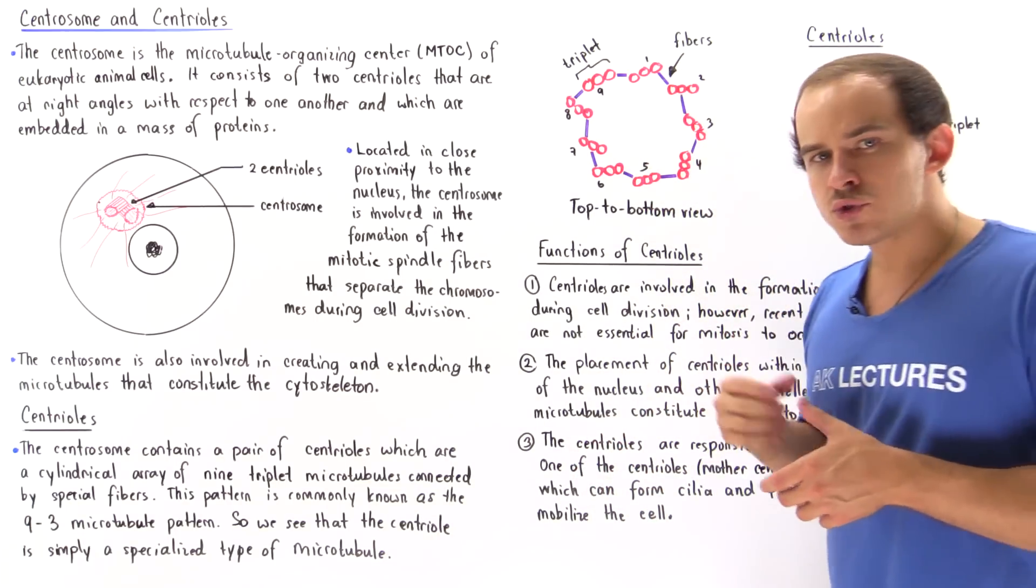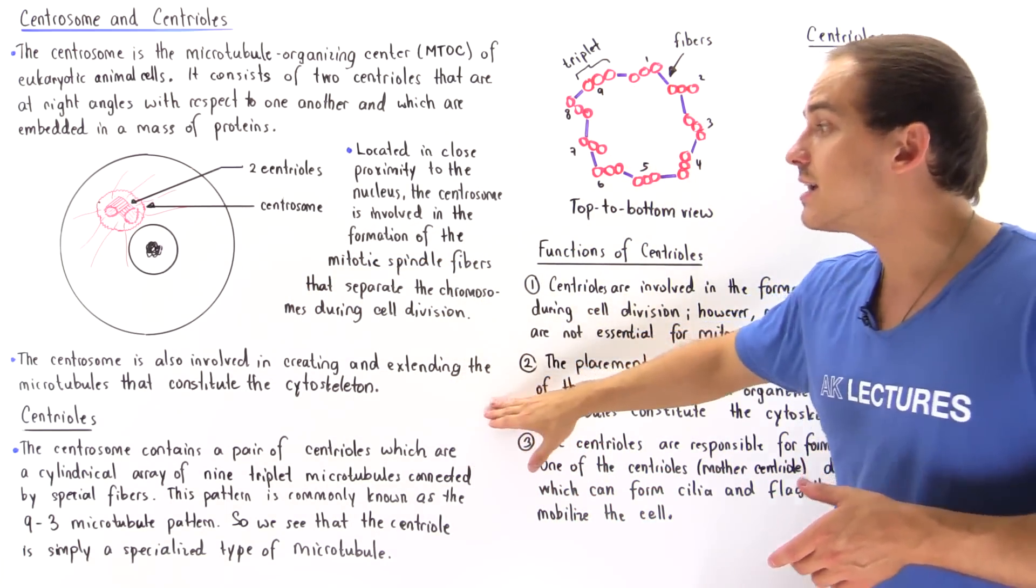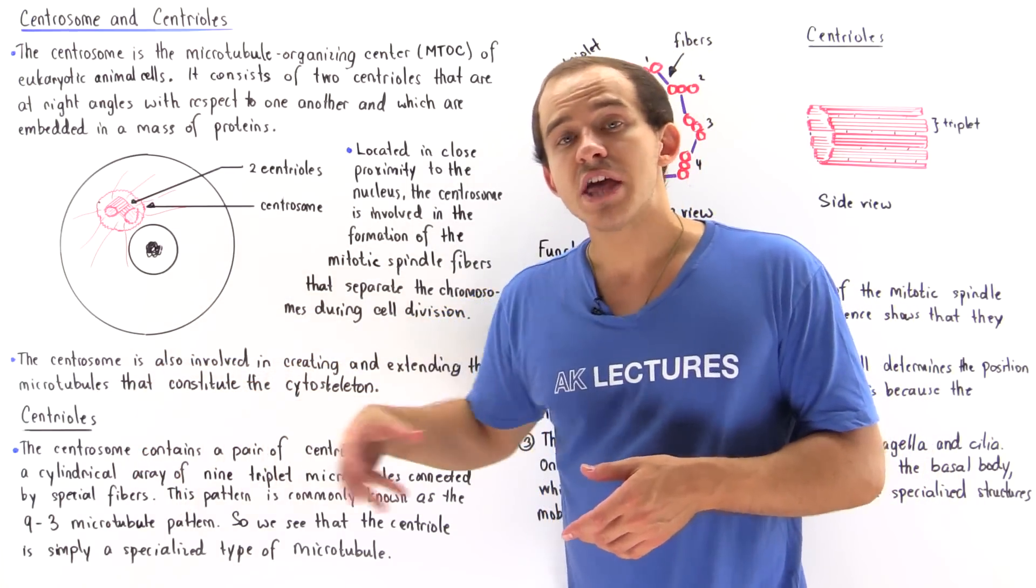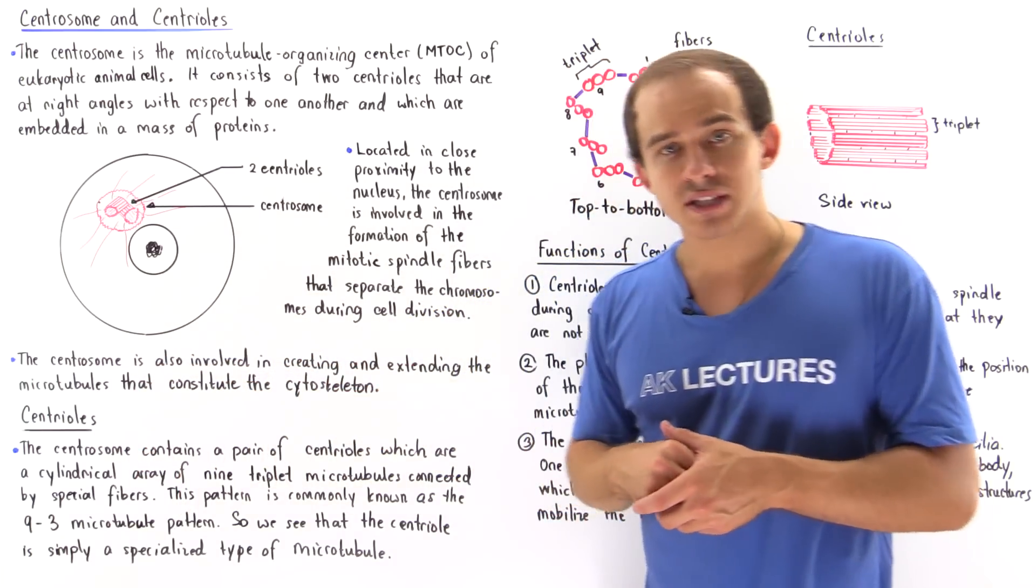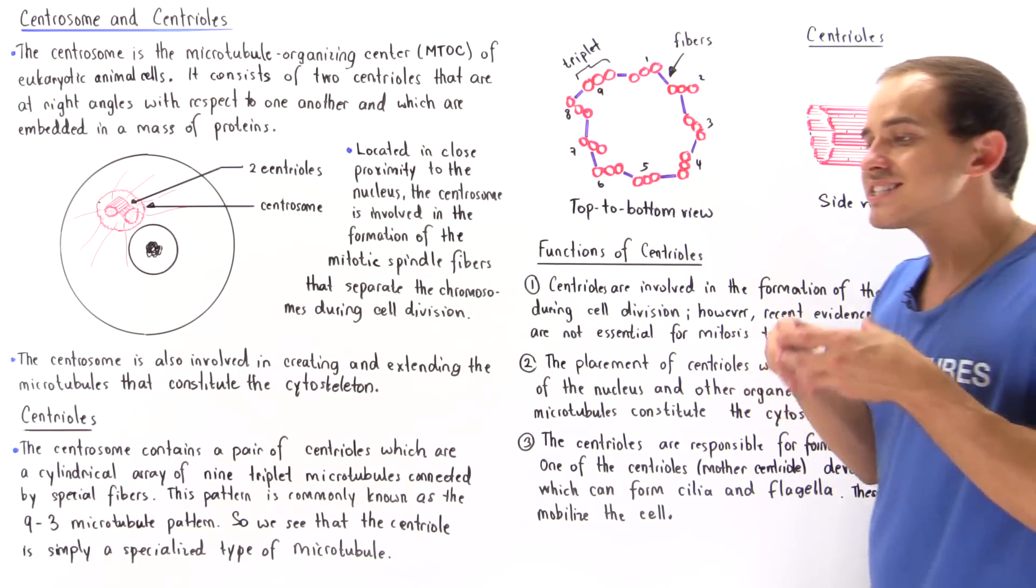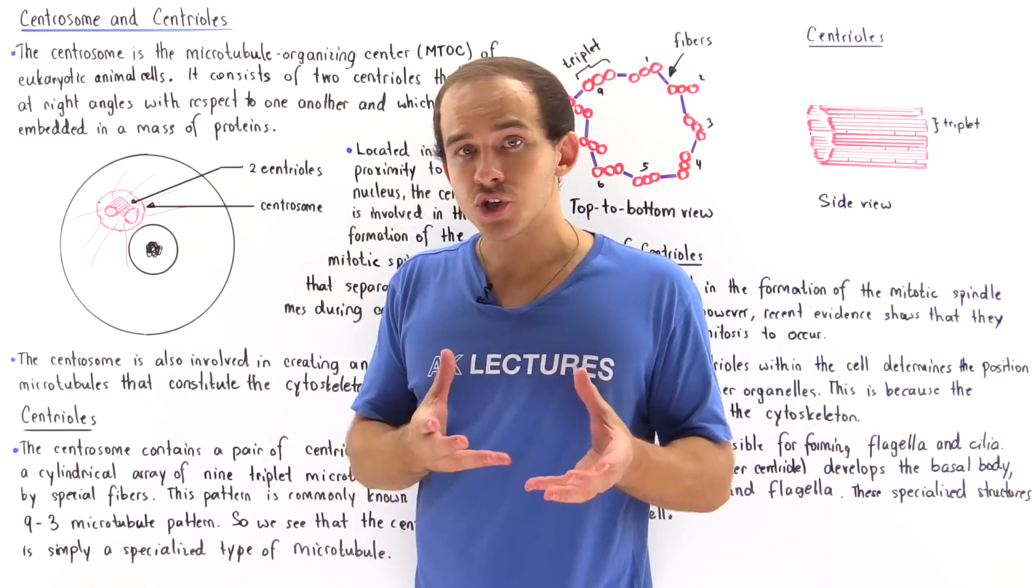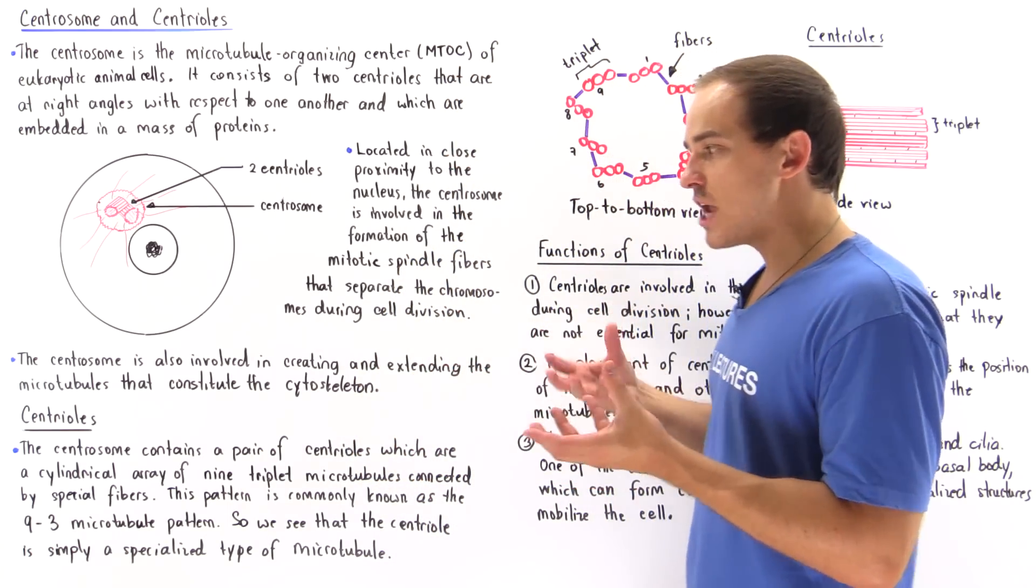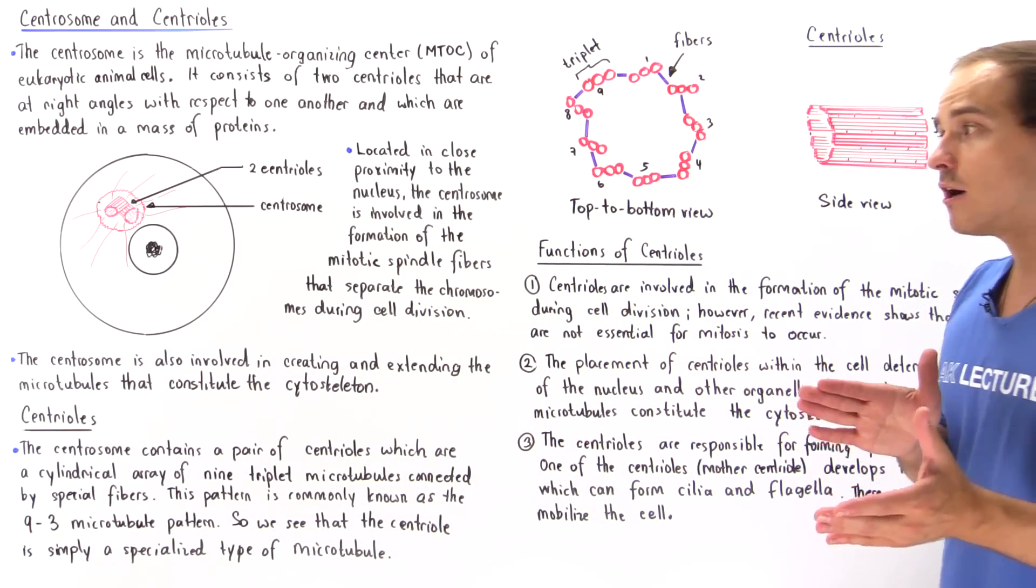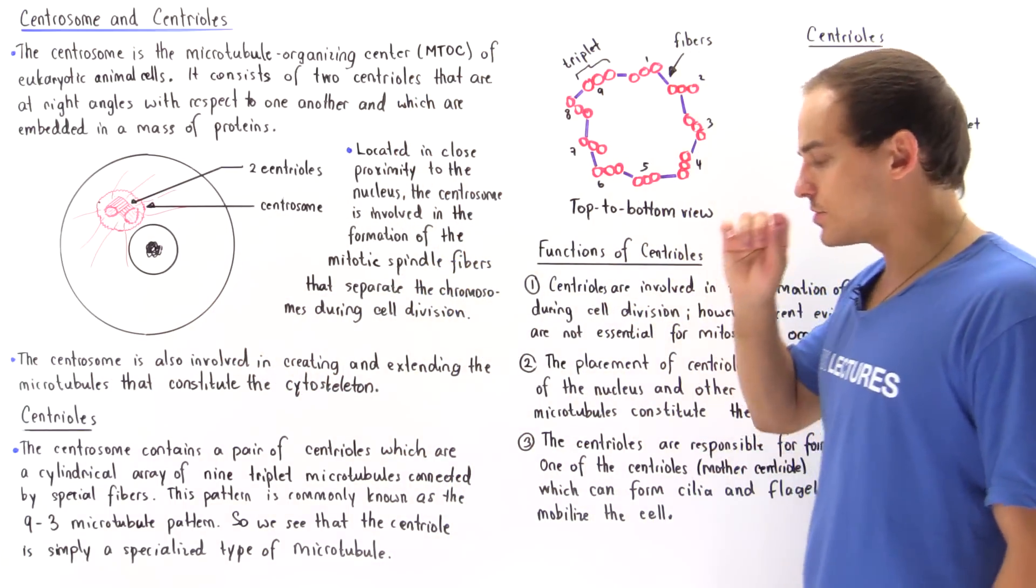The centrosome is also involved in organizing and creating and extending the microtubules that constitute our cytoskeleton. Remember the cytoskeleton is basically the scaffolding of our cell. It gives the cell structure and shape. There are three different types of fibers and one of these fibers are our microtubule fibers.